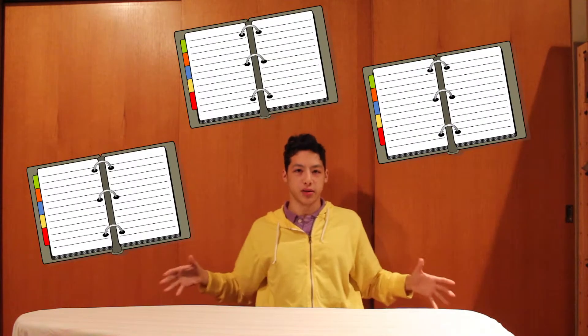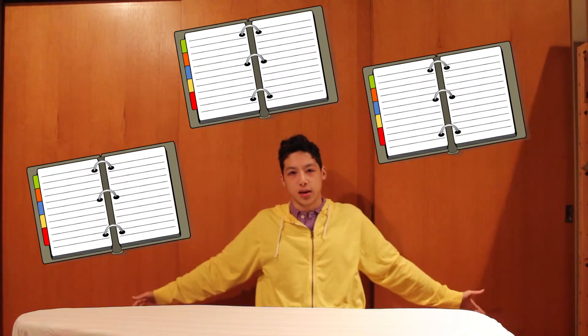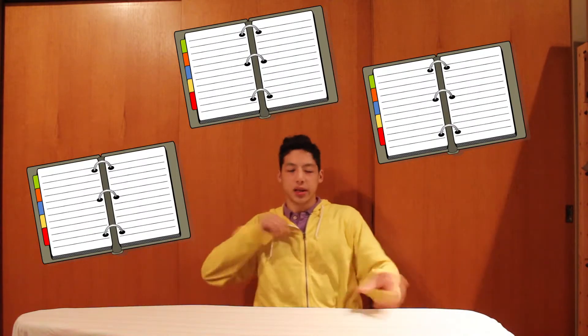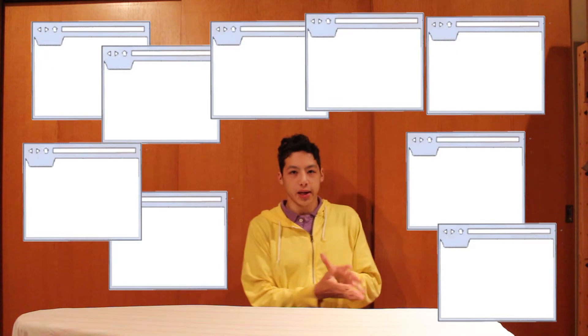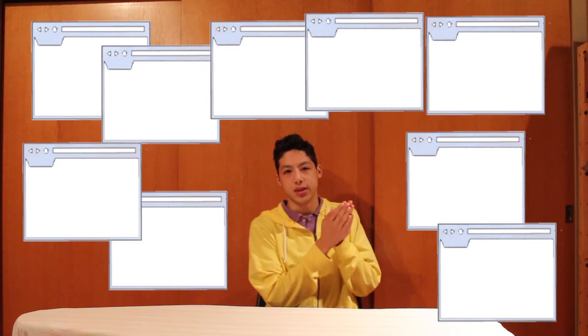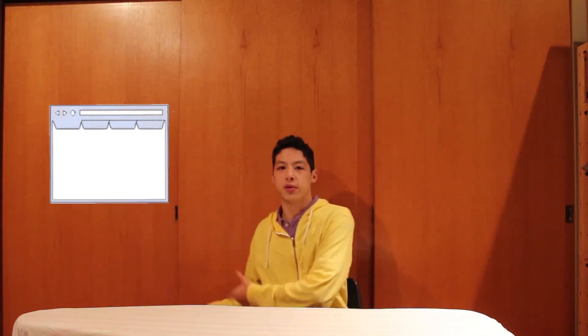If I was to make an analogy on this, a binder would be like a window, and you can have multiple binders all open over your desk, but sorting through them and keeping them organized can sometimes be difficult. This is why they invented tabs, which, like in a binder, keeps information separate but still in one place that can be moved around easily.